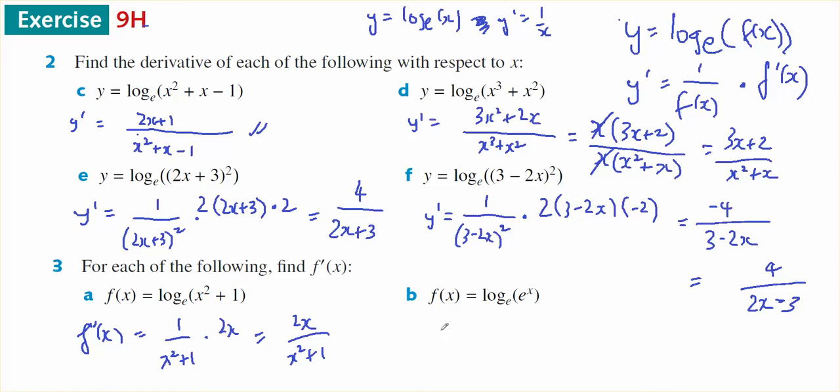And last example, I'm going to have 1 on e to the x. Derivative of e to the x is e to the x. They cancel to leave 1.